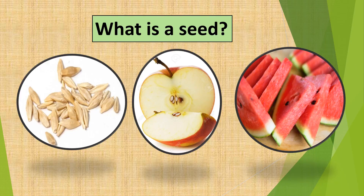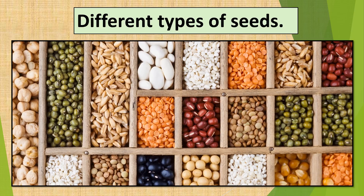First, let us understand what is a seed. A seed is the tiny part of a plant which gives rise to a new plant. Seeds have different shapes, sizes, colors and textures — some may be smooth and some rough to touch. Lentils, peanuts, almonds, black gram, soya bean, and chickpea are some of the seeds we eat.